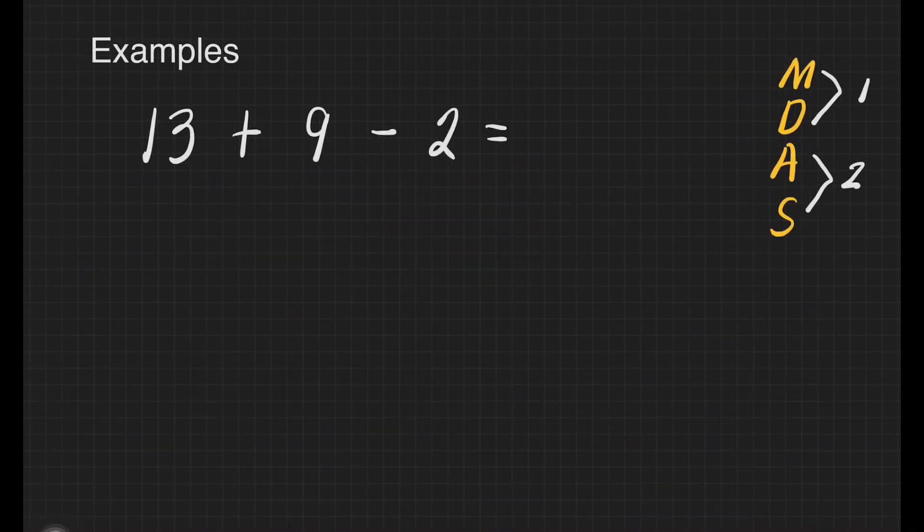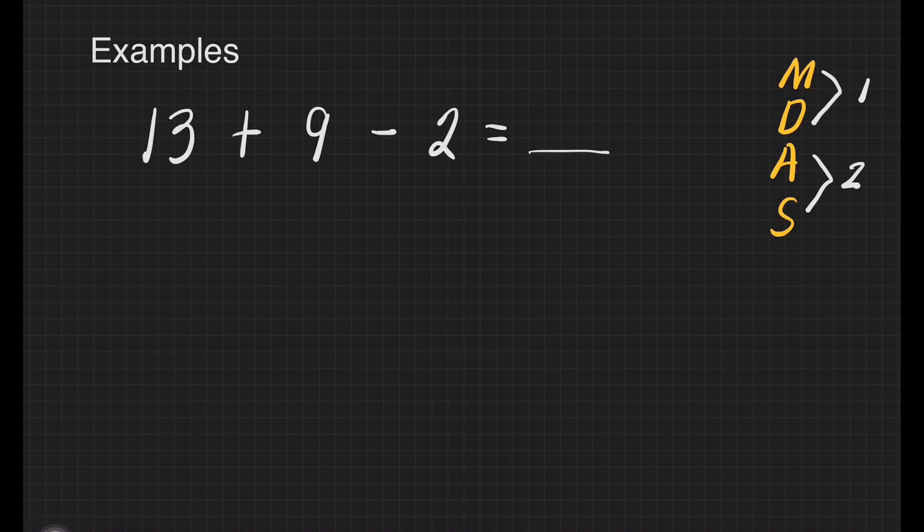Next question: 13 plus 9 minus 2 equals blank. What are we going to do first? Are we going to add or subtract? Since addition appears first, we will do addition: 13 plus 9.